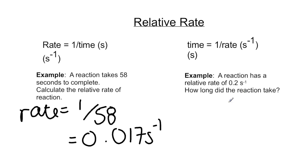If for some reason you had the relative rate and you want to know how long the reaction takes, say you're trying to plan an experiment, then you're just going to rearrange the equation. So this time you have time equals 1 divided by the rate which is 0.2 per second. This is going to give you your answer in seconds. So the whole reaction took 5 seconds to complete with that as your relative rate.